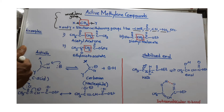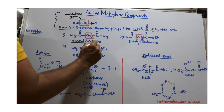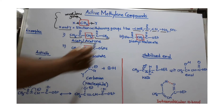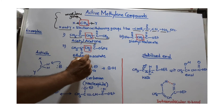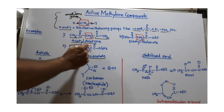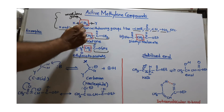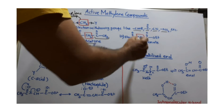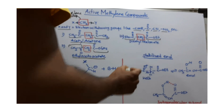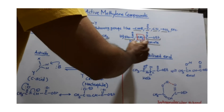Consider a few examples. The first one is acetyl acetone, where a methylene group is present between two electron withdrawing ketone groups. The next example is ethyl acetoacetate, where the methylene group is present between two electron withdrawing groups: a ketone and an ester. The third example is diethyl malonate, where two ester groups are attached to the methylene group. All three are active methylene compounds.